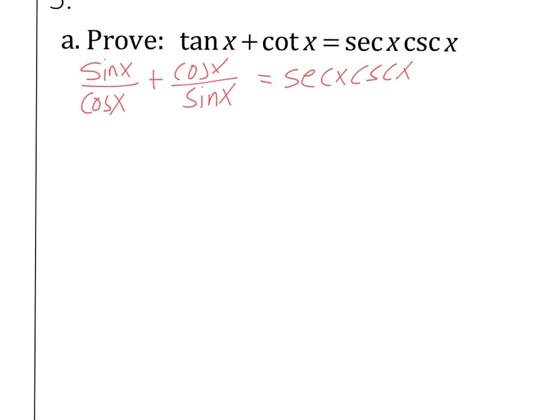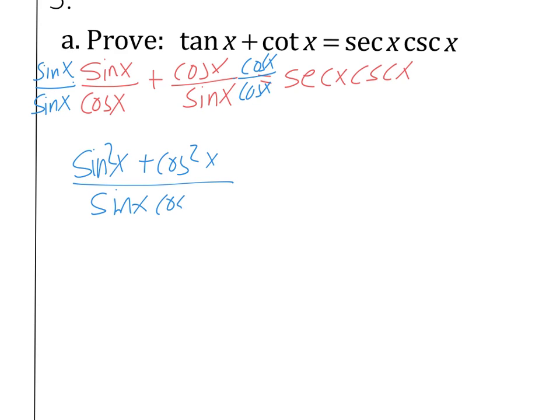I'd like to combine these. I'm going to use some common denominators. Multiply the first part by sine X over sine X. And the second part by cosine X over cosine X. On top, that gives me sine squared X plus cosine squared X. And on the bottom, that gives me sine X cosine X.